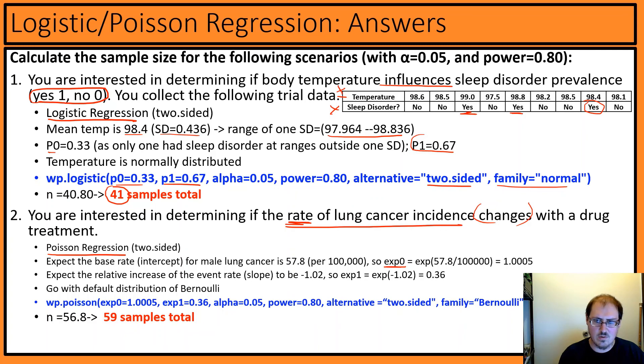These rates are exponential, by the way. The exponential of negative 1.02 is 0.36. Because I don't really know much information about this drug treatment, we're going to say it's the default with Bernoulli. Plug all these things in here, and it gives us a total sample size of 59.